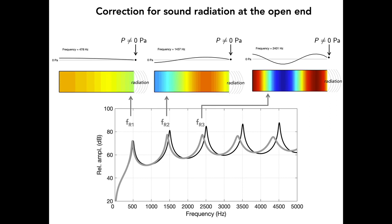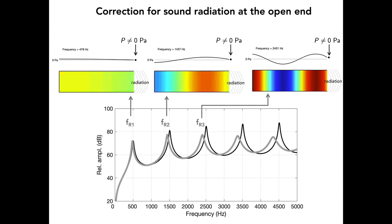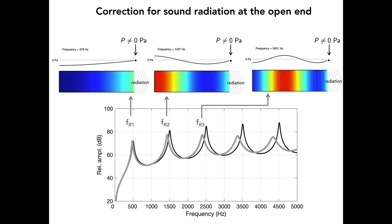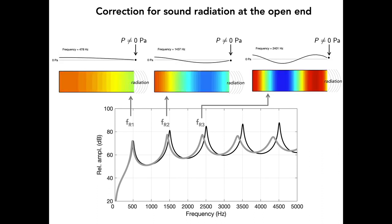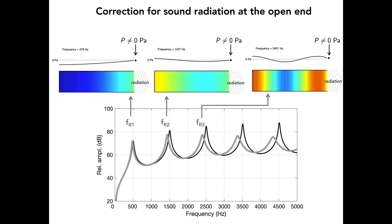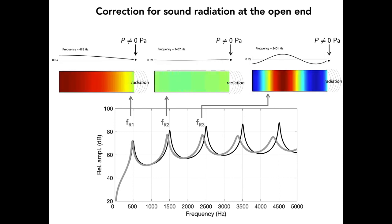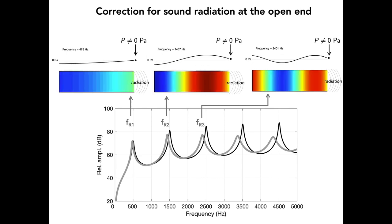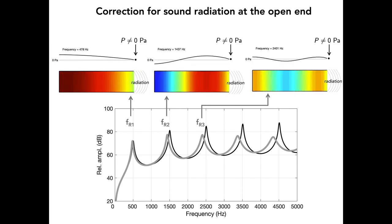Standing waves corresponding to each of the first three resonances of the uniform tube will be shown again, but with the correction for sound radiation. The patterns of pressure variation appear to be nearly identical to those in the idealized cases. The difference is simply that the frequencies at which the standing waves occur are slightly lower than before.